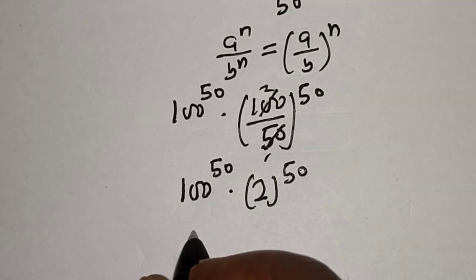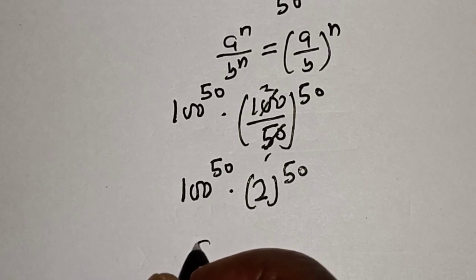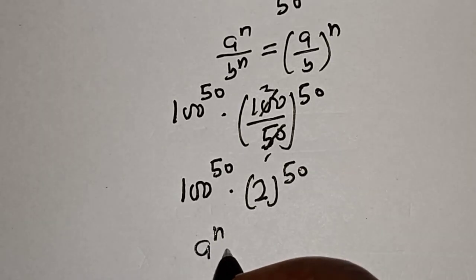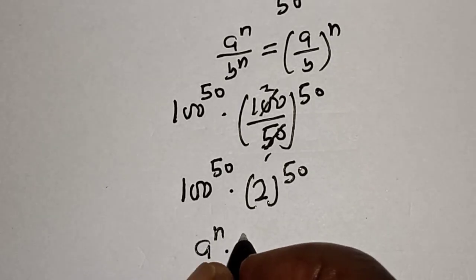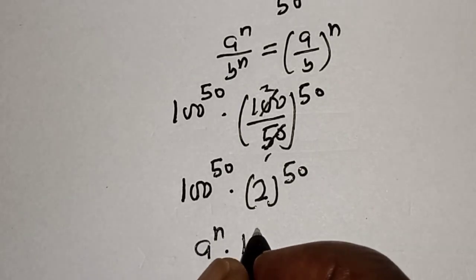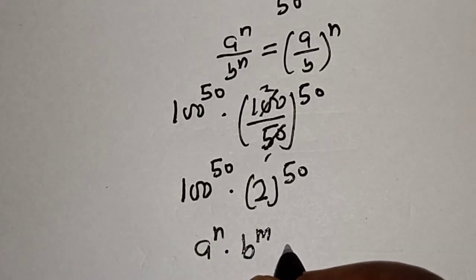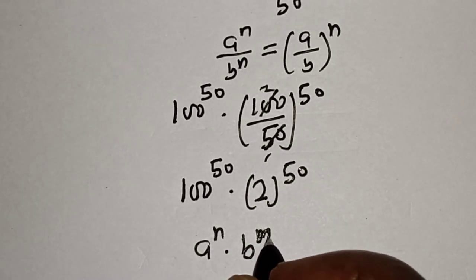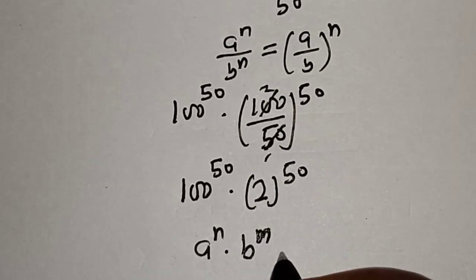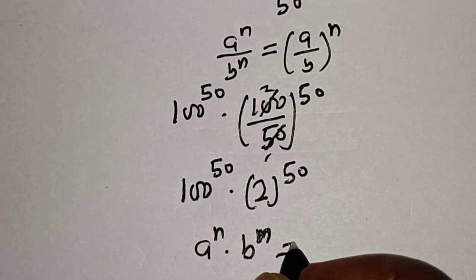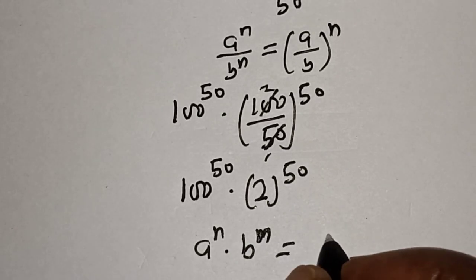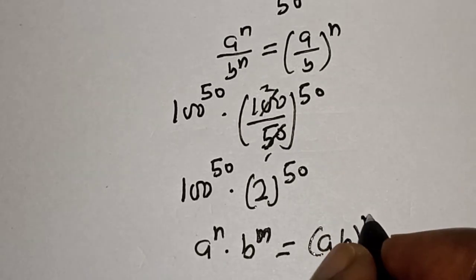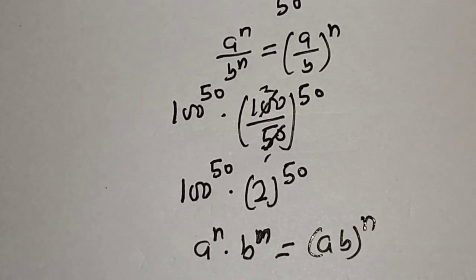Take note of this rule: A raised to power N multiplied by B raised to power of N is equal to A times B to the power of N.